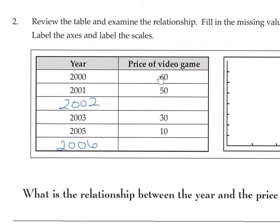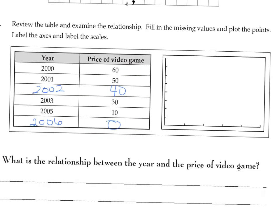Now the prices of video games: 60, 50, there's a space here, 30, 10. So what's the relationship? There's a relationship of minus 10 here. So 2002 should be 40. 2003 is 30, 2004 would be 20, 2005 is 10. So 2006 should be 0. We're going to put that information over here.